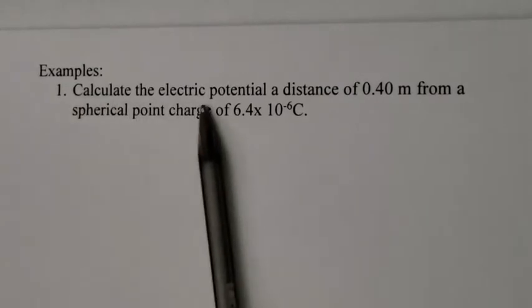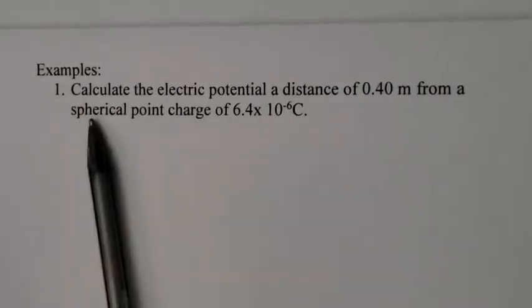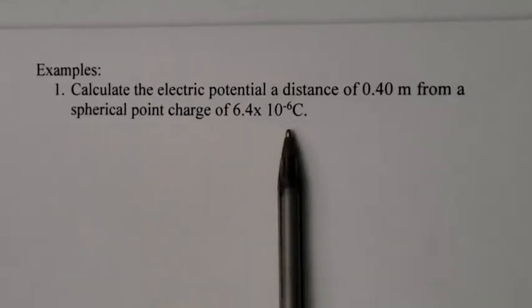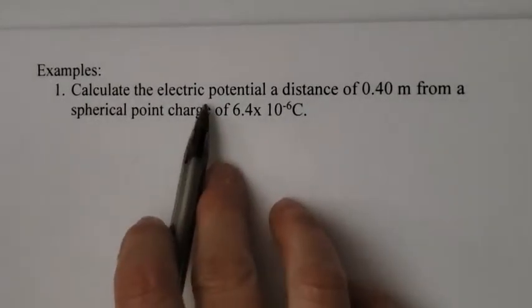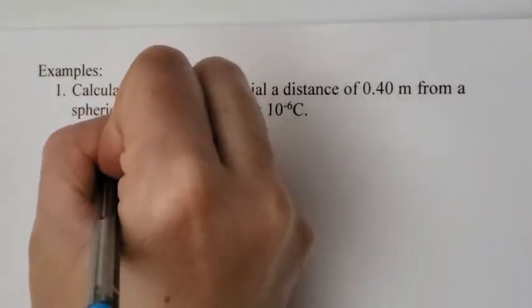Example number one: Calculate the electrical potential, a distance of 0.4 meters from a spherical point charge of 6.4 times 10 to the negative 6 coulombs. Let's write down what I know. First thing is, I'm looking for this electrical potential. Electrical potential is just your voltage, so I'm looking for the voltage.